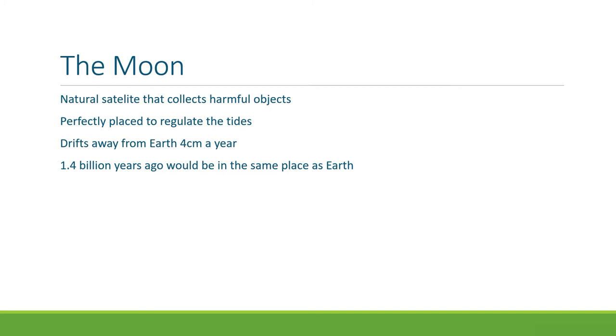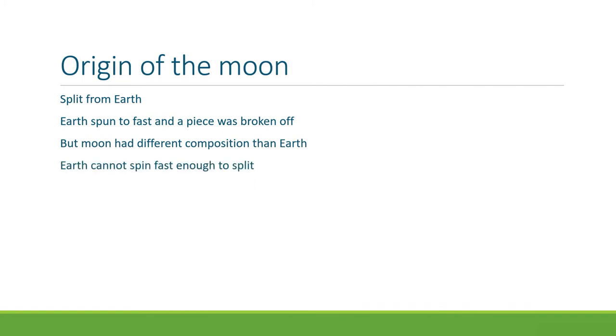So when we think about the origin of the Earth, there are many theories out there. One of them is that it split off from Earth. The idea was Earth began to spin so fast a piece was broken off. But the problem is the moon and the Earth are made out of different stuff. They cannot have come from the same source. So the Earth couldn't have had a piece split off to be the moon because the moon is something else totally different. Also, the Earth cannot spin fast enough for a piece to break off or for to split into two, and the moon would not survive the split.